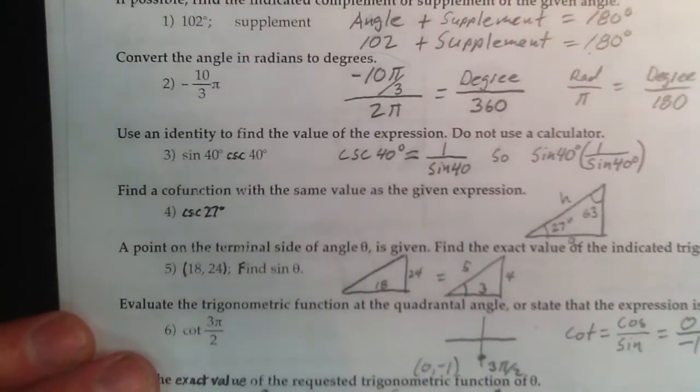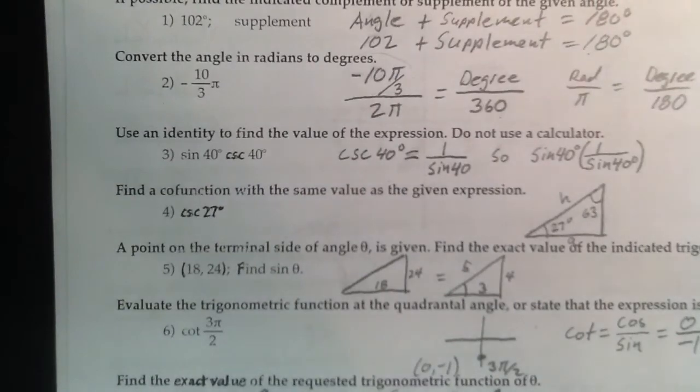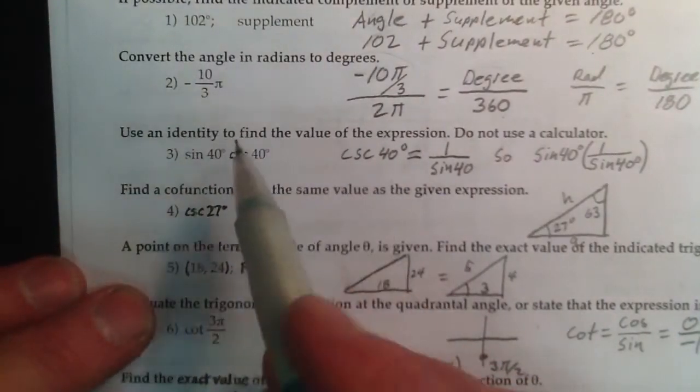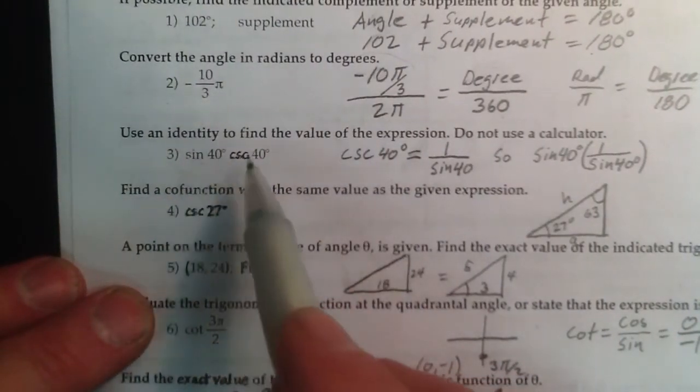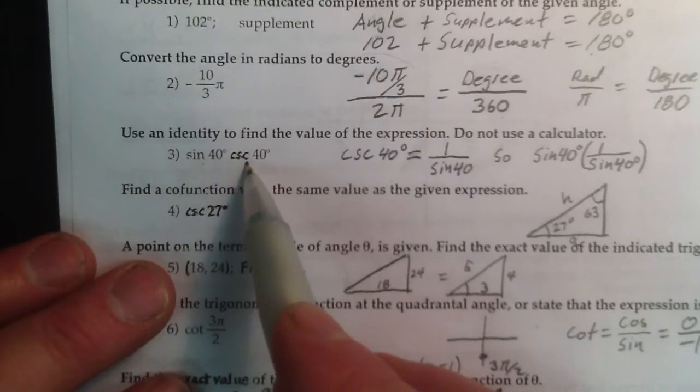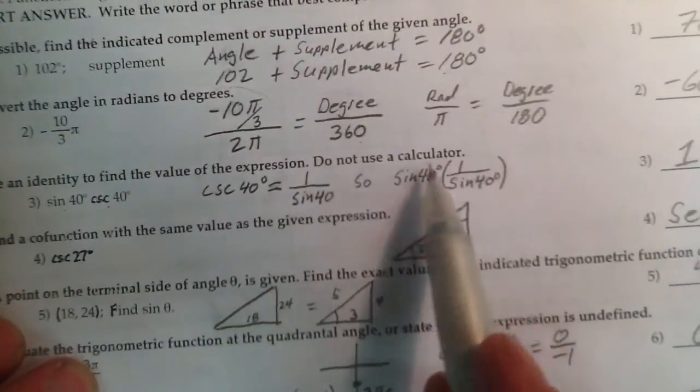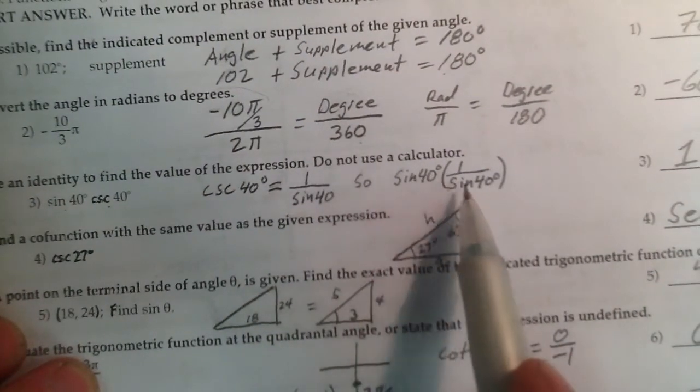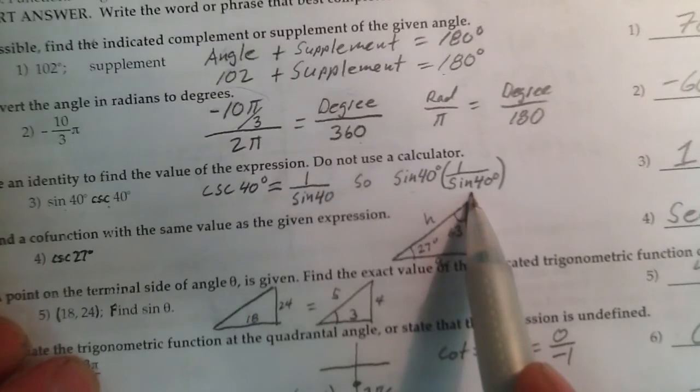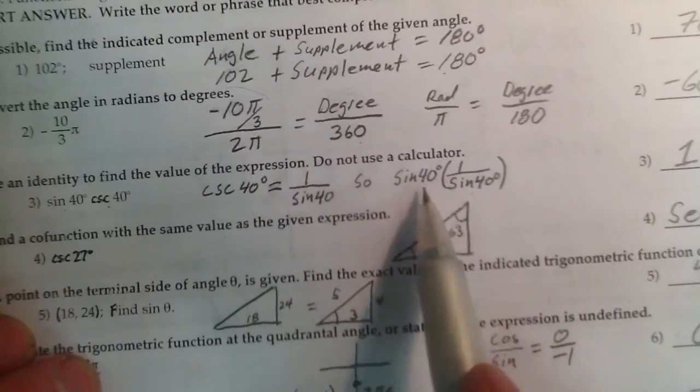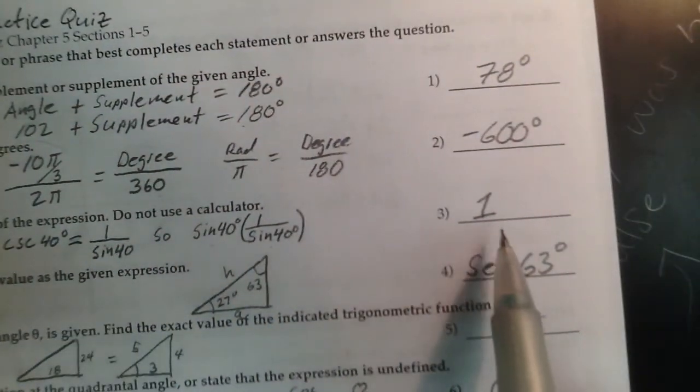This one here looks hard at first, but what you need to realize, this guy and this guy are inverses. And what happens when you multiply two inverses? There's sine of 40, there's the inverse of sine of 40. Anytime you ever multiply two inverses, you always get one.